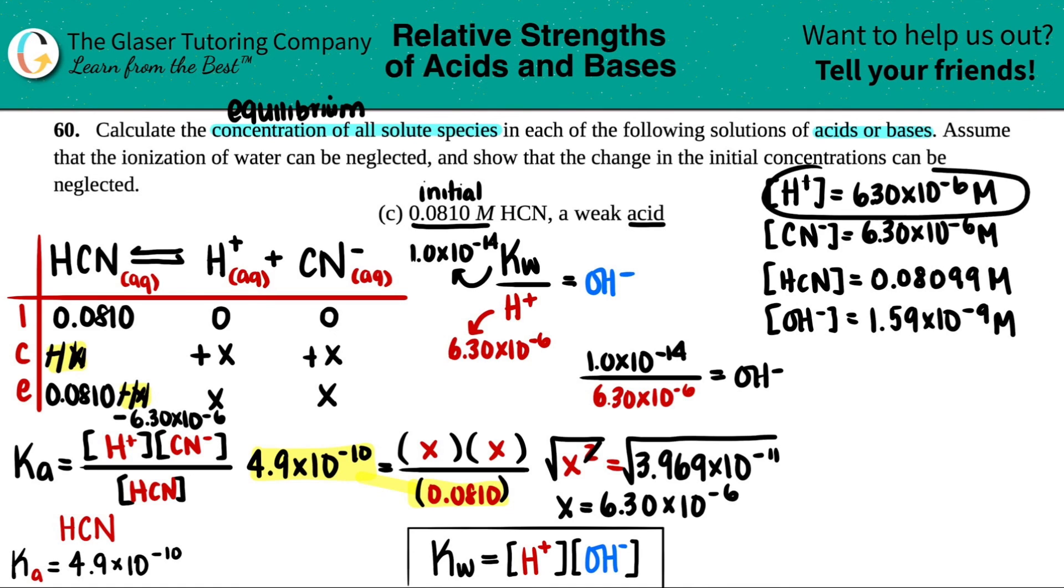And you have way more H plus concentration than OH minus, which also is telling you that this is an acid. Okay. So these are your answers, your four answers. That's all the solute species. And that's it. I really hope this helped. Let me know in the comments, subscribe to the channel, and I hope you guys are having a great day out there. Let's keep studying hard. Good luck on your future tests and quizzes, and I'll see you all later. Okay. Bye-bye.